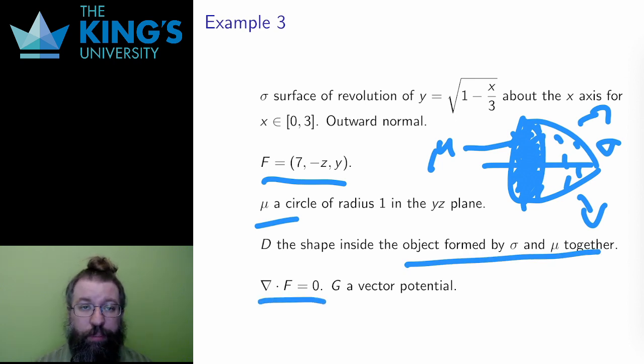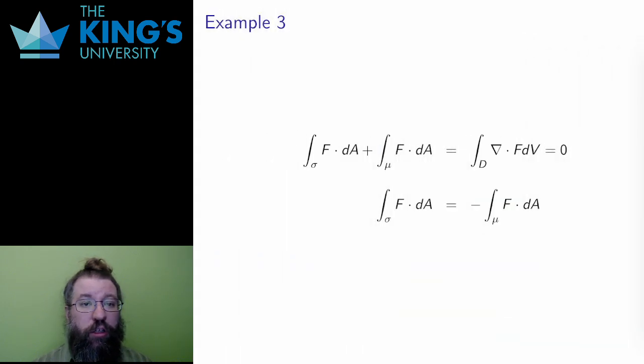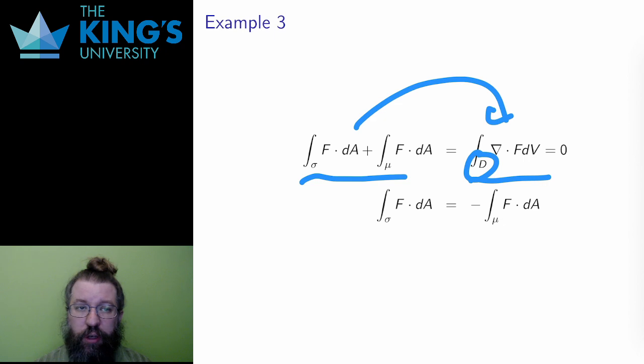Alright, I have all this set up, what does this do for me? Well mu and sigma make a closed surface, so I can use Gauss to change this into a triple integral over the enclosed region. But the divergence of the field is zero, so the triple integral also has to be zero, it's just the integral of zero.